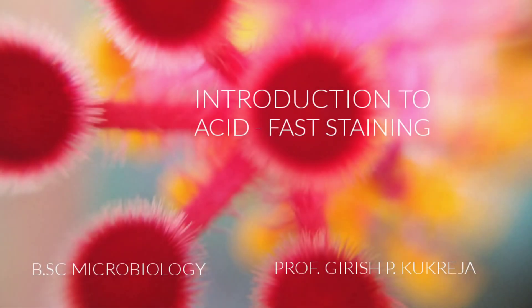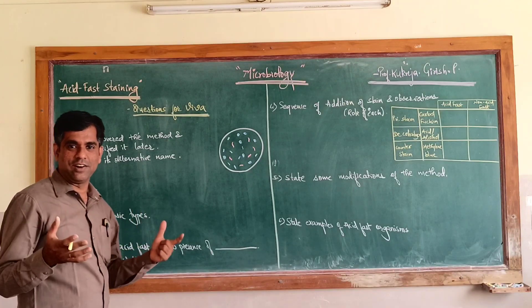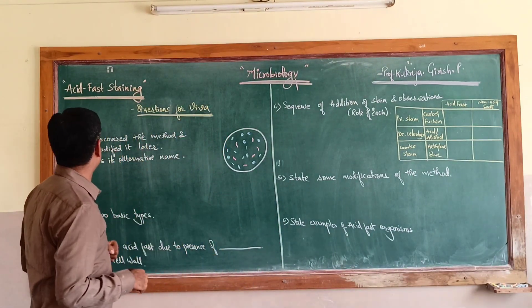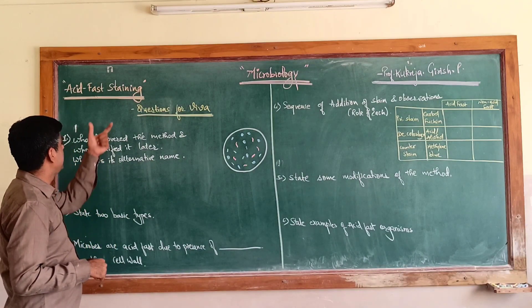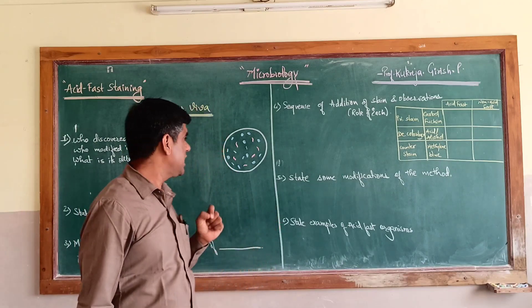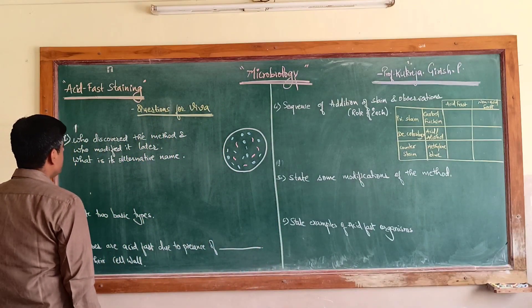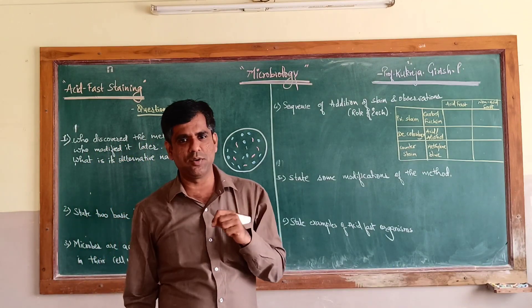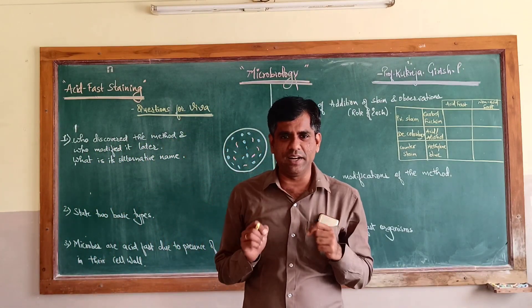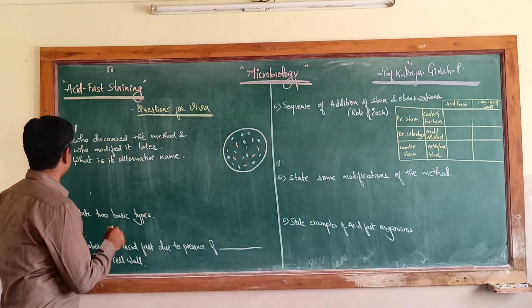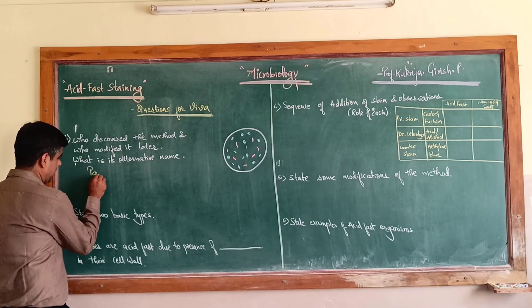Today we are going to talk about one very common method of staining - acid fast staining. The first question: who discovered this method? This acid fast staining method was discovered by Paul Ehrlich. Do we have any alternative name for this particular method?